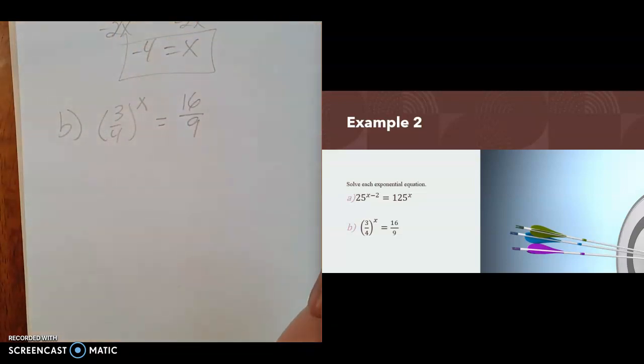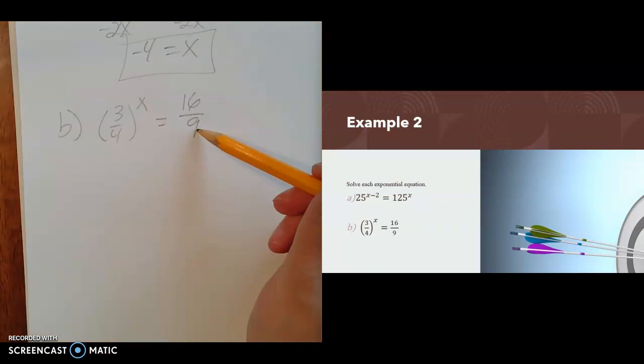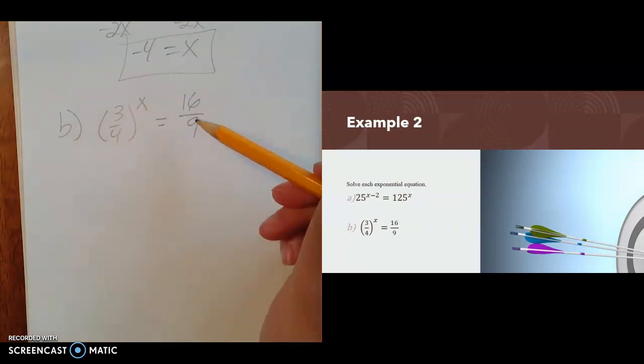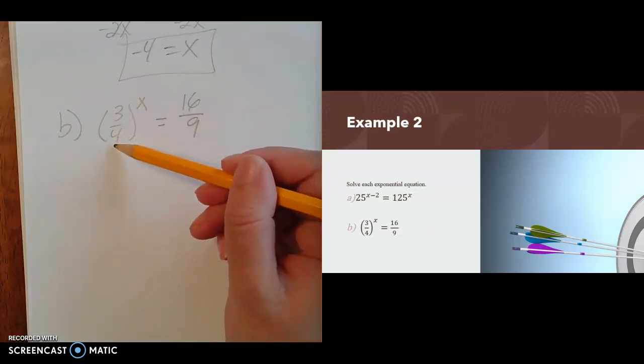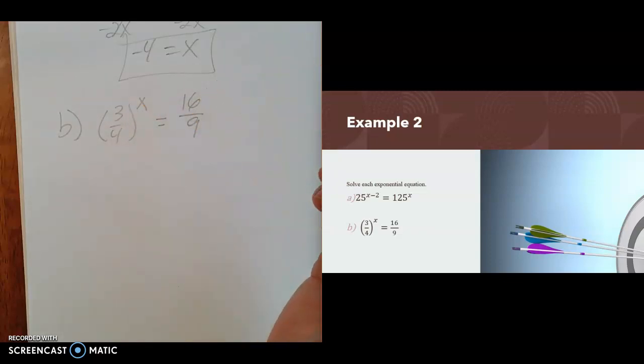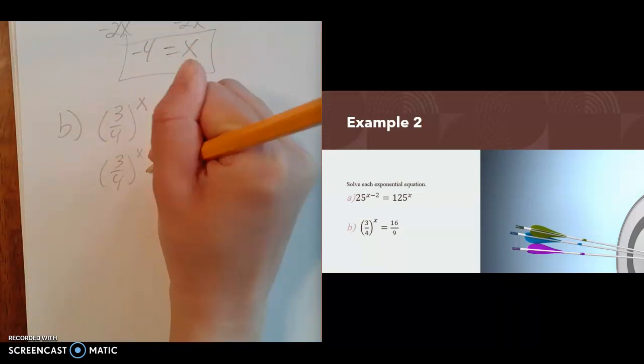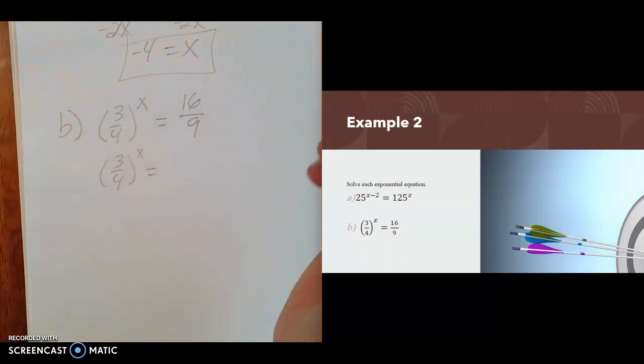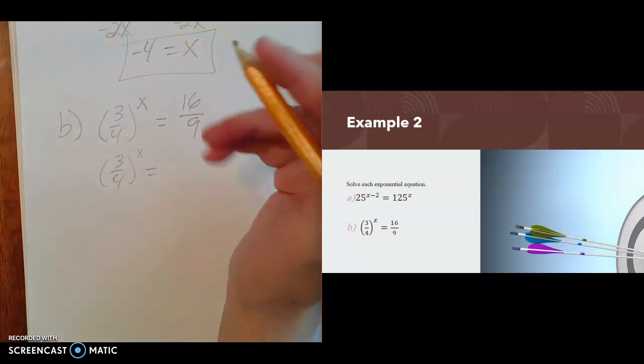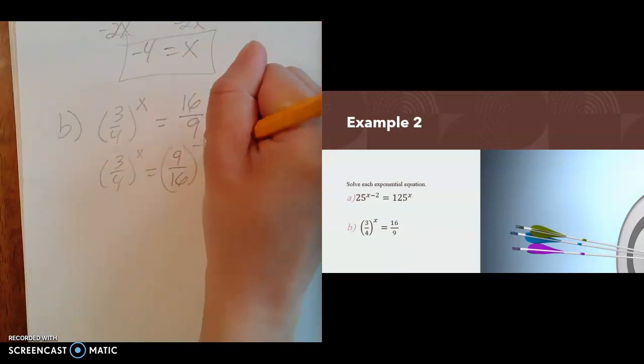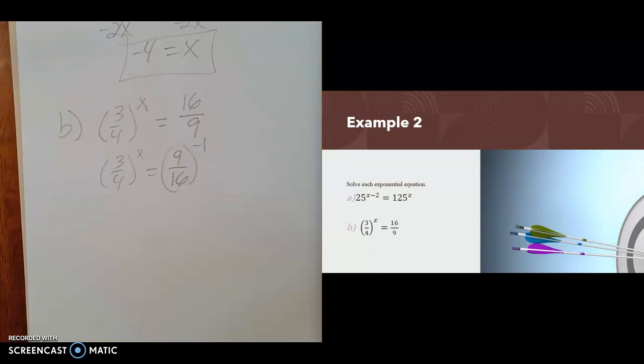Probably the first thing I notice is that 9 is a power of 3, which is really on the top over here, but it's on the bottom over there. And 16 is a power of 4, and 4 is on the bottom, and 16 is on the top. So it's like I'm flipped from where I want to be. So if you ever have that situation, I want the numerator and denominator to switch places. You can switch 9 and 16. That's raised to the negative first power when you do that.